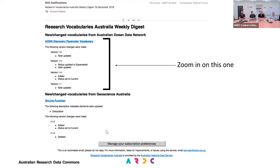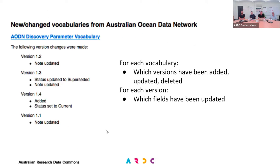Let's zoom in on this so you can see a bit more clearly. For each vocabulary that you get any notification about, you'll see which are the new versions, which versions have been deleted if any, and where there's been an update to a version — it shows you which of the fields have been updated. It can get interesting if somebody has done something interesting there. And if you have subscribed to notifications from a particular owner, then you get notifications about new vocabularies as well.